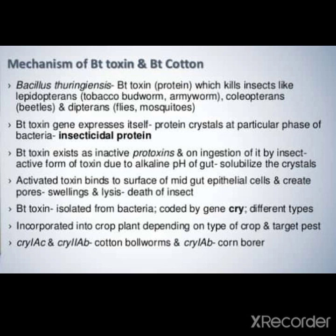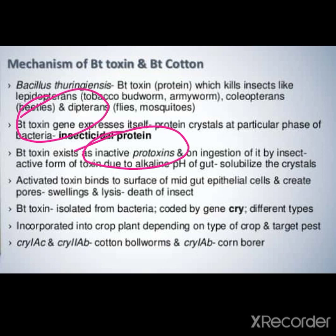Next, je da bt toxin gene hoon da hai, e apne aap express kar da hai at a particular phase of the bacterial cell. E is karke noo insecticidal protein bhi keha janda hai. Jodeo e insect di body de vich hoon da hai, e keri form de vich present hun da hai - inactive form de vich. Jattha ka bt toxin bacteria de andar hun da hai, tattha ke unnoo koi nuksan nahi pa chan da, kyunki inactive form de vich hun da hai. E is karke unnoo inactive protoxin keha janda hai.